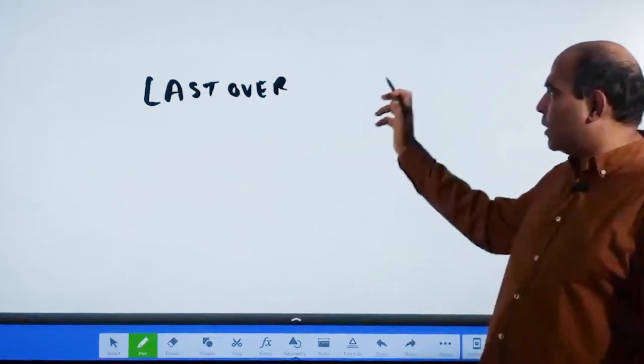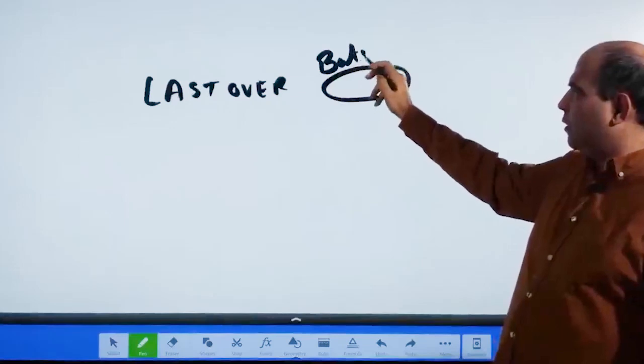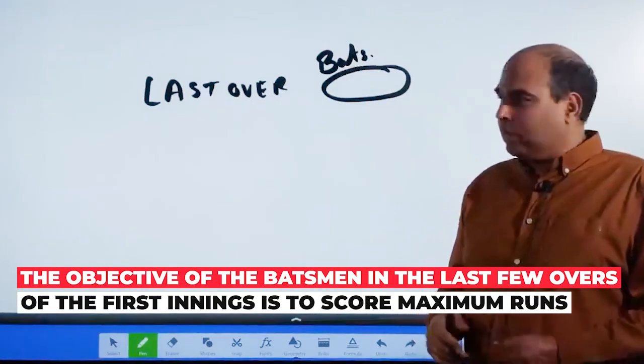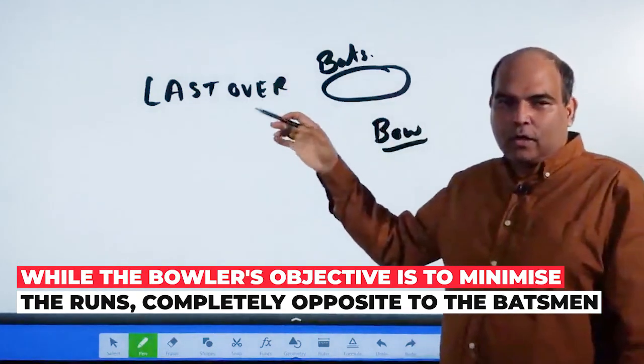In the last over, what is the objective of the batsman? The objective of the batsman is to score maximum number of runs, whereas the bowler's objective is that the runs in the over should be minimized.